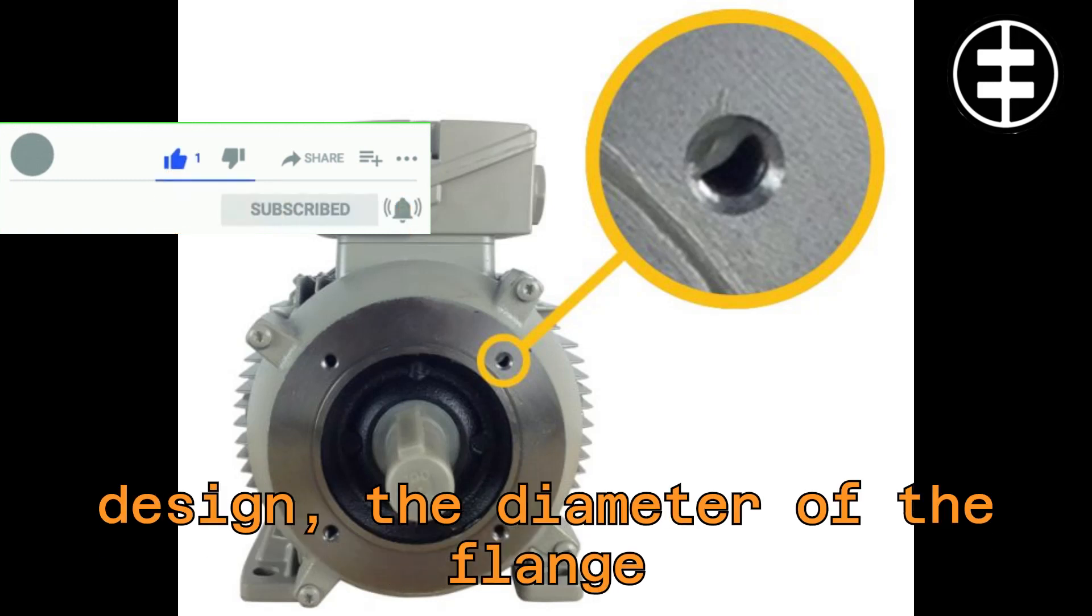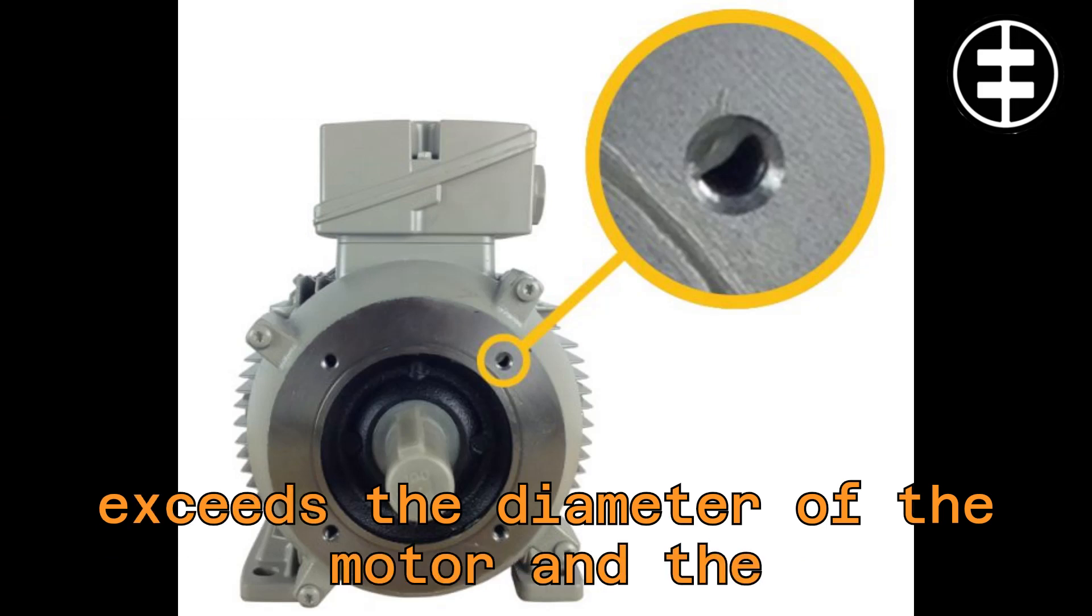For a B5 design, the diameter of the flange exceeds the diameter of the motor, and the bolt holes are unthreaded. Step 3.